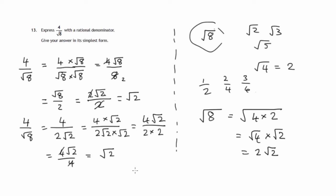It may be worthwhile checking that this is right. If we square root 2, we get 2. What happens if we square 4 over root 8? 4 over root 8 times 4 over root 8. That's 16 over root 8 times root 8 is 8.